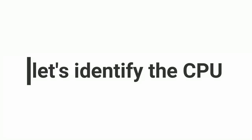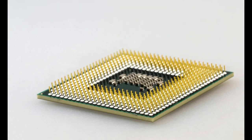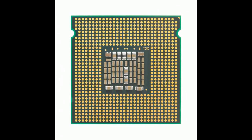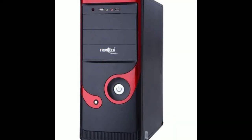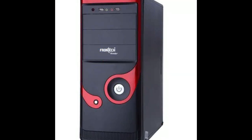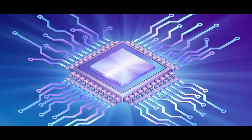Let's identify the central processing unit. The central processing unit, or the CPU, can be identified as a digital circuit that processes data according to given instructions. Whatever tasks are performed by the computer, the central processing unit runs in the background. The main function of the processor is to execute instructions stored in a computer program.